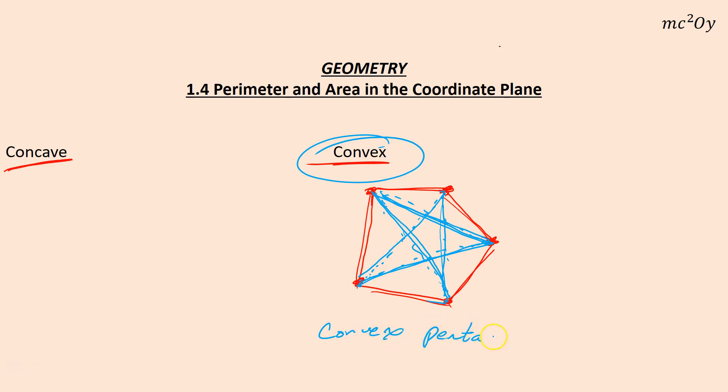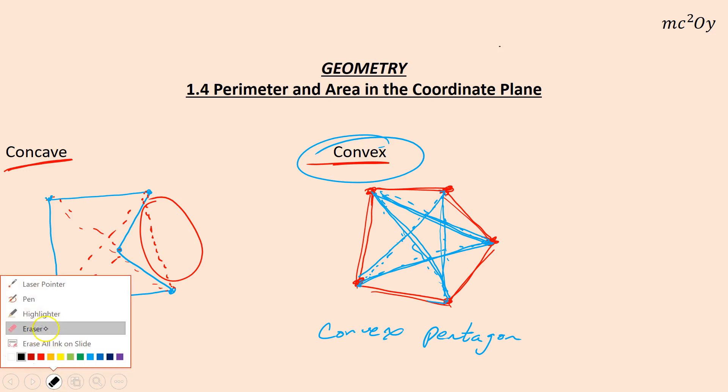Now if I have one, two, three, four and move a point inside like that, five, I have a pentagon again. When I draw my diagonals this time, some are inside, but this diagonal right here is on the outside of the shape. If a diagonal lies on the outside of the shape, it is called a concave shape. This is a concave pentagon.